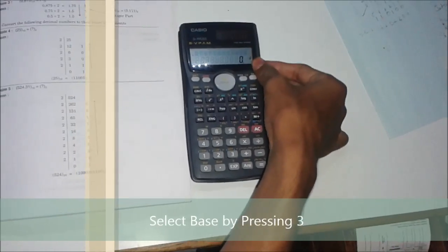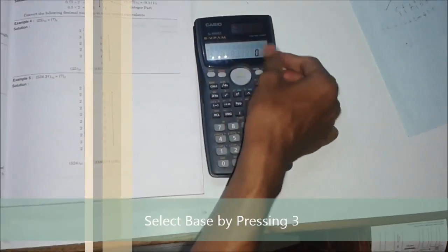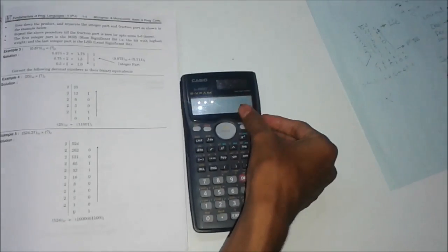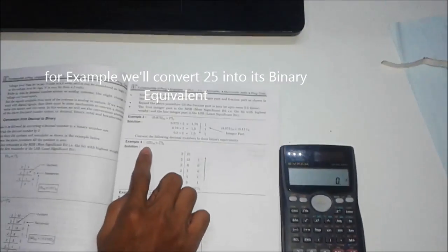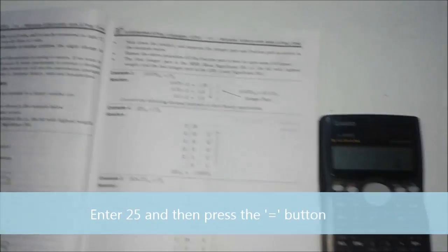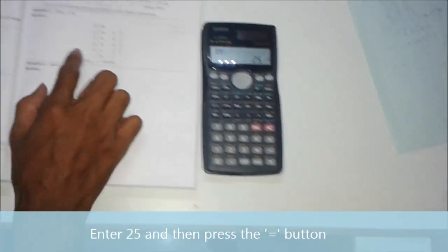As you can see, we have entered into the base function. Here by default, it is taking every number as decimal. For example, we will convert 25. Now press 25, then press equals.